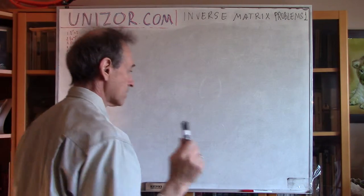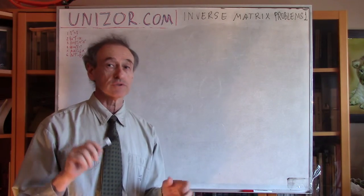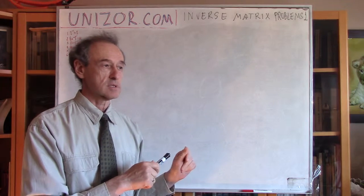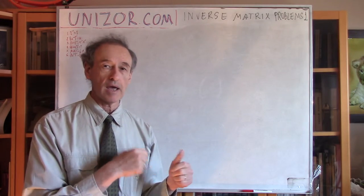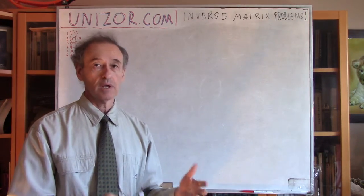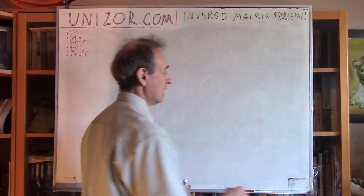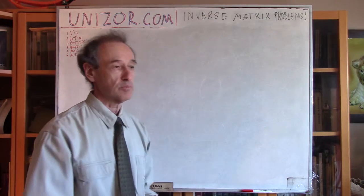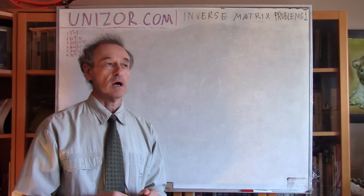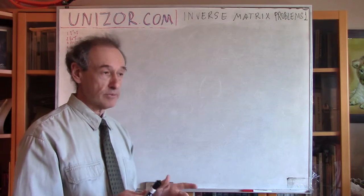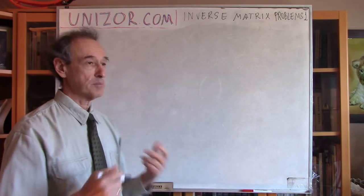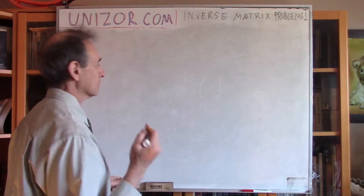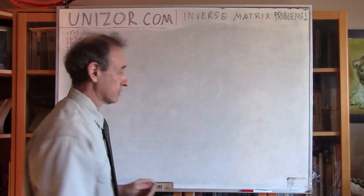Certain matrices are difficult to invert. With a two-dimensional matrix I explicitly built the inverse in a previous lecture. In the case of three-dimensional and higher, it's a little bit more difficult. However, there are certain matrices which are very easy to invert regardless of dimension, and these are diagonal matrices. Diagonal matrices have only diagonal elements not equal to zero; everything else is zero.